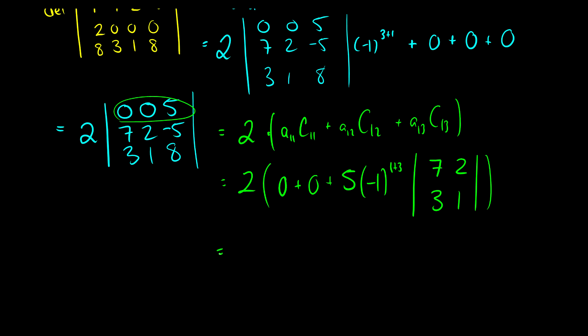Now at this point, this is going to be 2 times 0, 0 plus 5 times negative 1 to the 4, that's 5 times the determinant of 7, 2, 3, 1, which is 7 times 1 minus 3 times 2, that's 6. So our determinant is going to be 10.